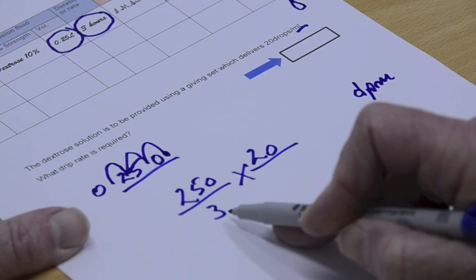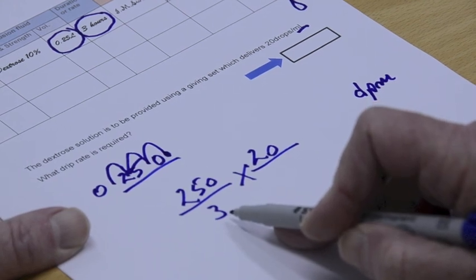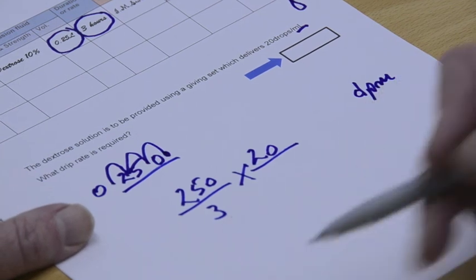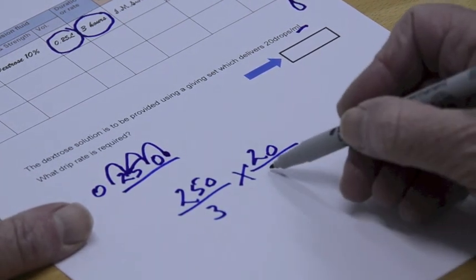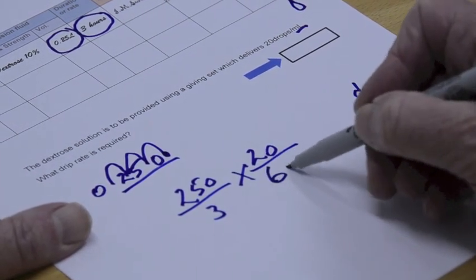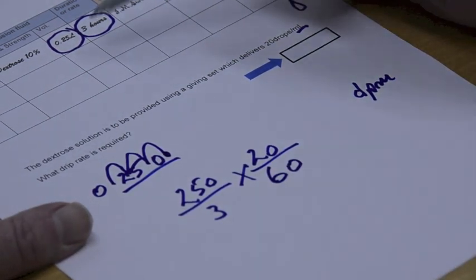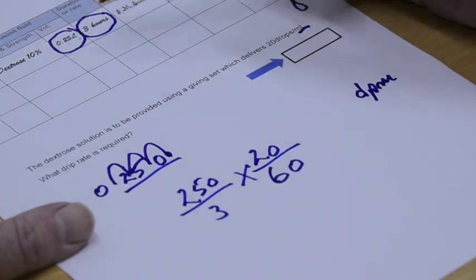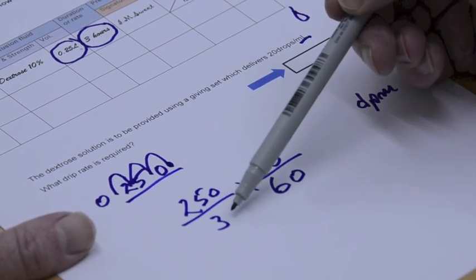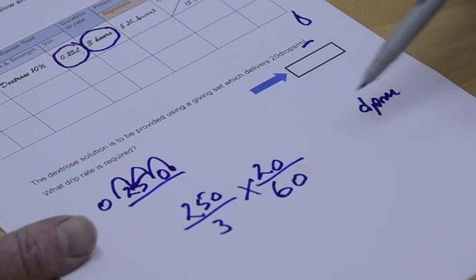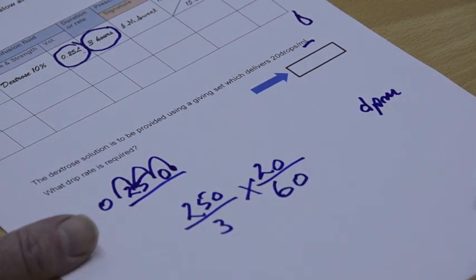And to convert three hours into minutes, we have to multiply by the number of minutes in an hour, which I know you know, is 60. So there we have it. The amount, 250, over three hours, our giving set is 20, and our 60 is converting to drops per minute.